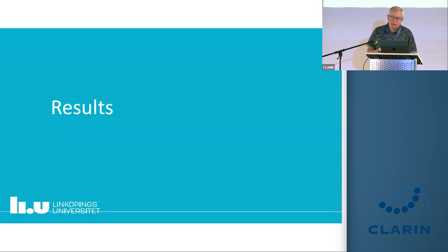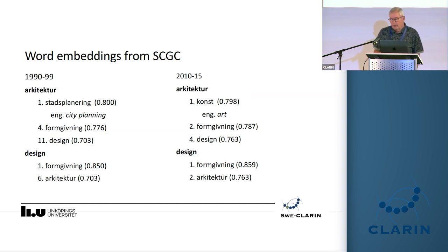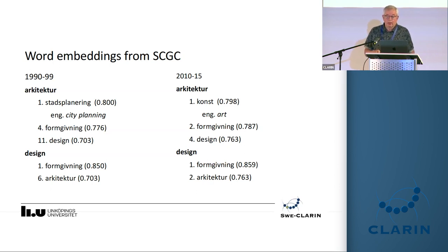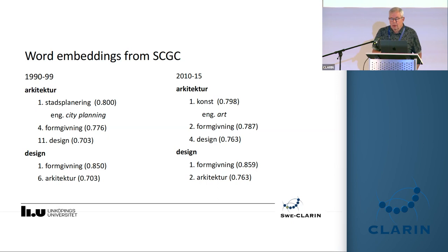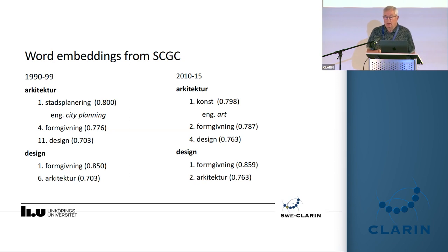Now to some of the results. We have basically three models of context for these words. The first is word embeddings from the general corpus. What you can see is that the assumption that the two words design and formgivning mean the same — that they are synonyms — is shown by the word embeddings: they are nearest neighbors in almost all of the word embeddings we produced. We can also see that design is approaching architecture in the word space. There is a difference between the 1990s and 2010s — it's coming nearer, not the nearest, but it's approaching.